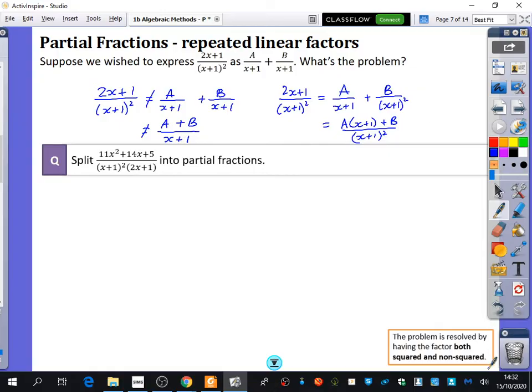So I've written that down here in this orange box. The problem is resolved by having the factor both squared and non-squared. And I also mentioned if it was cubed, you would have non-cubed, squared and cubed. You would have all three versions of it if it did come to that. And this is going to be a great example where I'm going to show you doing a mixture of method 1 and method 2. So please don't write down method 1 and then method 2. We're going to do a blended version for this, and you're going to see why it's going to be a blended version rather than just picking one of the two versions.